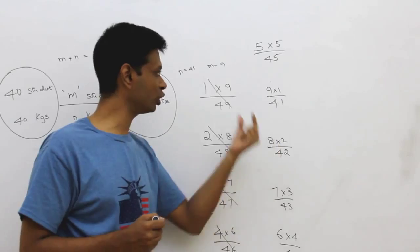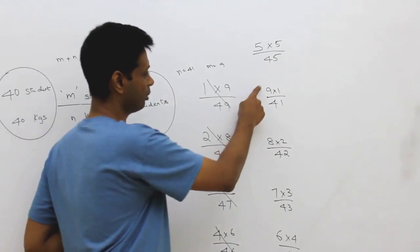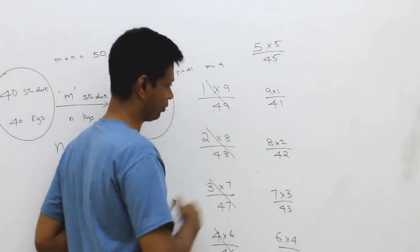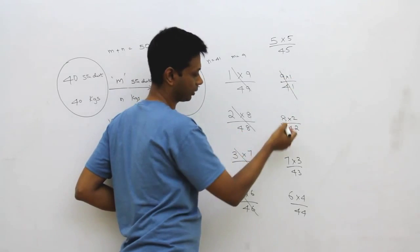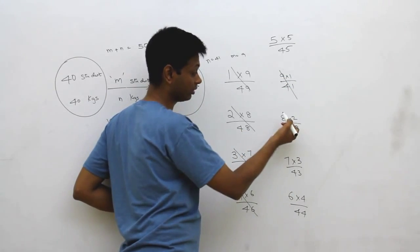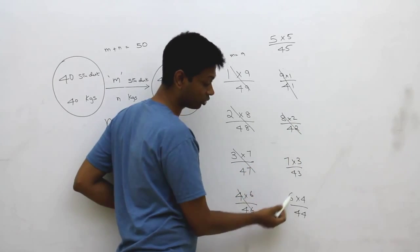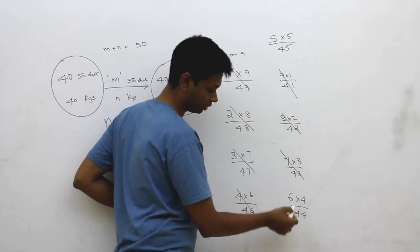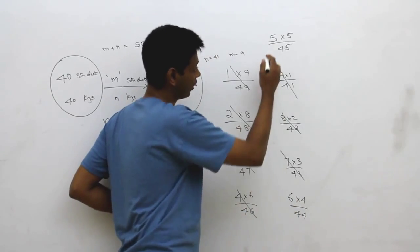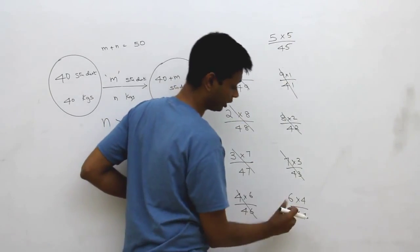This is going to hinge on the numerator. This is 9 by 41. This is 16 by 42. Obviously, this is higher. This is 21 by 43. This is just 16. Obviously, this number is higher. This is 21 by 43. This is 24 by 44. This is higher. This is 25 by 45. Only these two could be close.